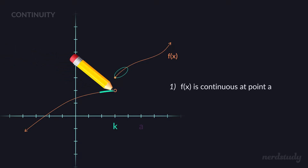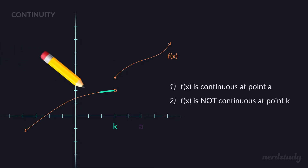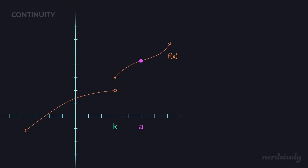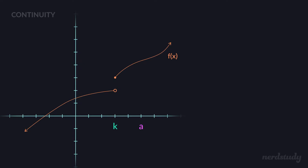But notice how for point K, if you wanted to draw a line from before K to after K, you wouldn't be able to strike a line through without having to lift up your pencil. You would literally have to draw from before it right up to K, lift up your pencil, and then draw the rest of it. So in a casual sense, something smooth that goes through a point — like being able to draw smoothly through point A — is in some sense what makes a graph continuous at point A.